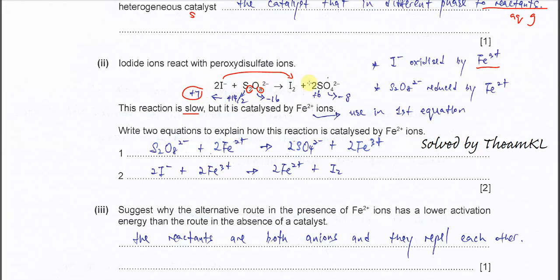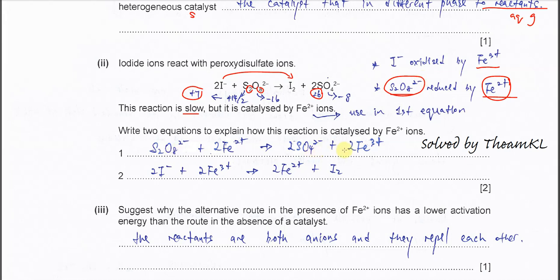After the reaction, the product is sulfate. With 4 oxygen atoms it is −8, and the overall charge is 2−, so sulfur is +6. From +7 to +6 means it undergoes reduction. Therefore the peroxidisulfate must be reduced by iron(II). In the first equation, you put peroxidisulfate together with iron(II) — iron(II) is oxidized and peroxidisulfate is reduced.